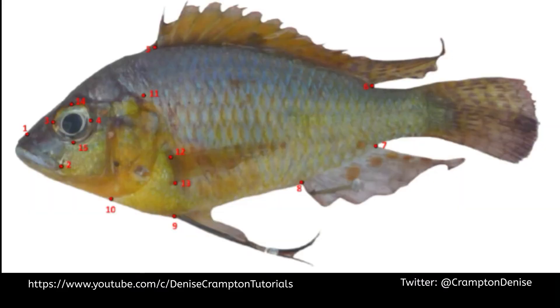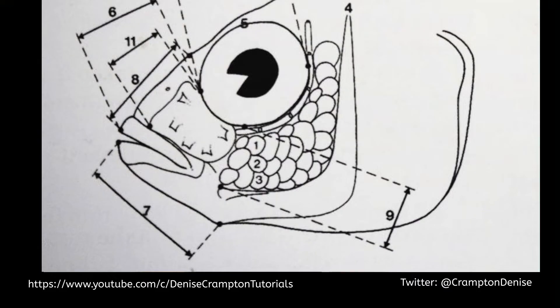In my videos on shape analysis I have focused on geometric morphometrics. I've touched a little bit on more traditional methods, but mainly just to speak about the advantages of geometric morphometrics. But it really is important when possible to use both methods in conjunction with each other.